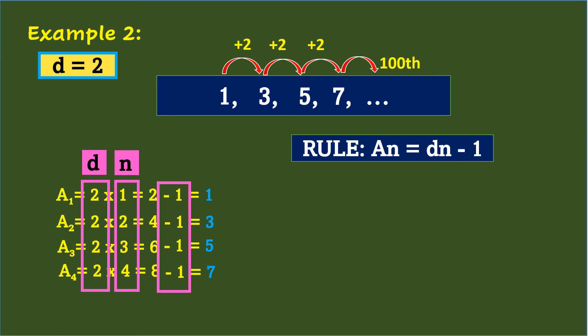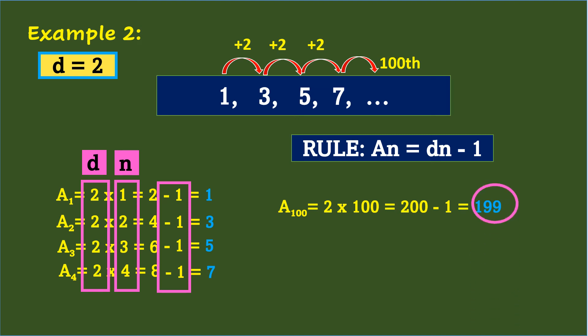Following the rule, to get the 100th term: a sub 100 equals 2 times 100 equals 200, minus 1 equals 199. So the 100th term in this sequence is 199.